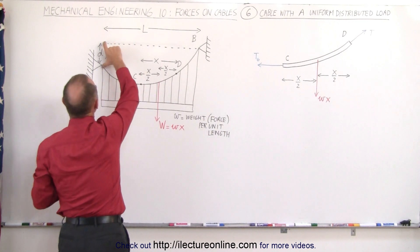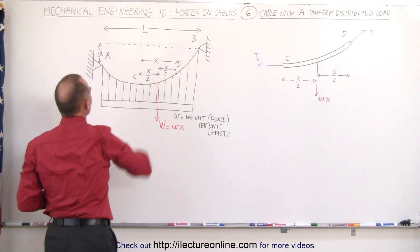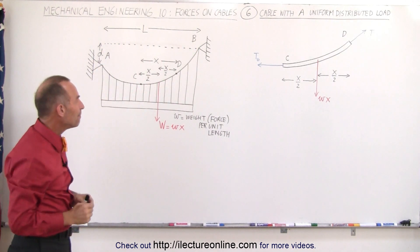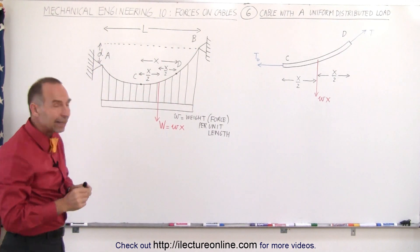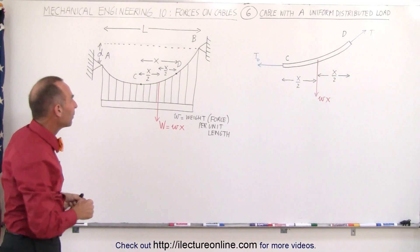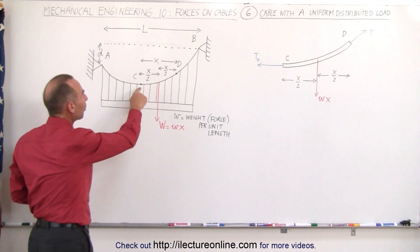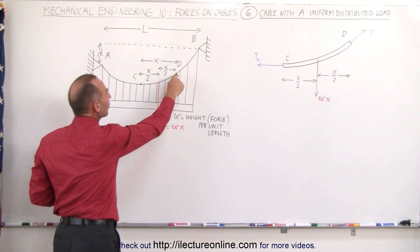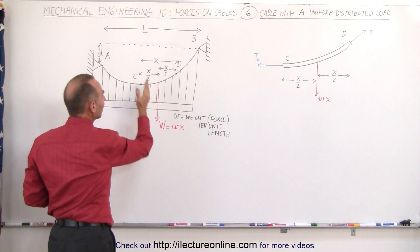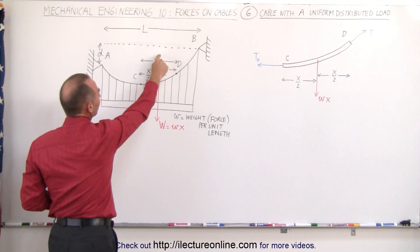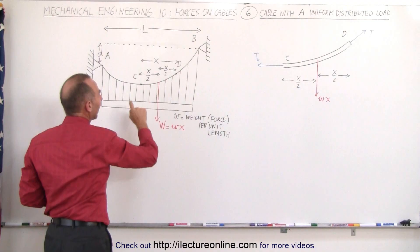The distance between A and B in the vertical direction is considered D. Let's pick two points on the cable: the lowest point C and any other point on the cable, D. The distance between C and D in the horizontal direction is X.